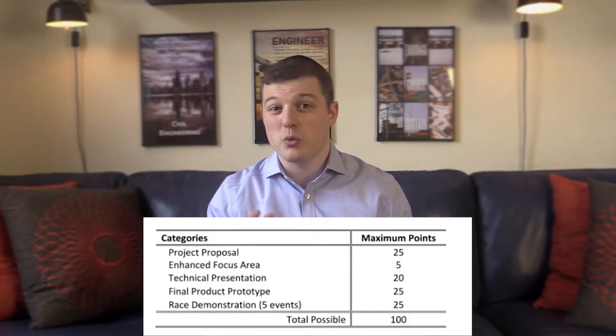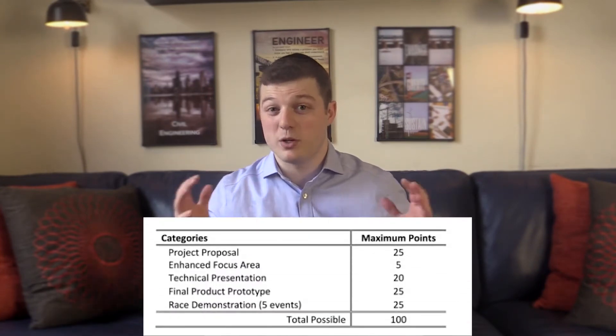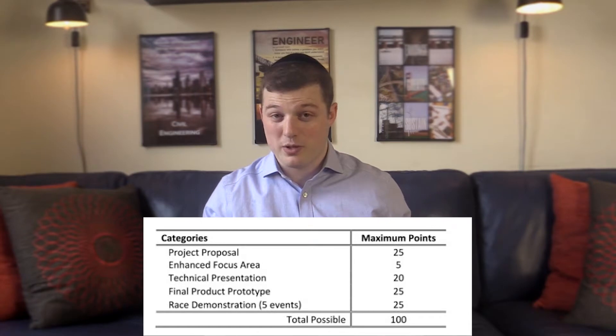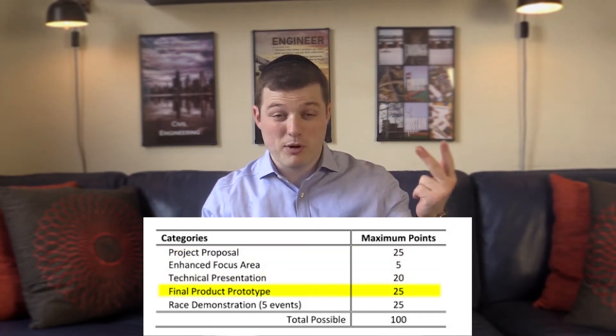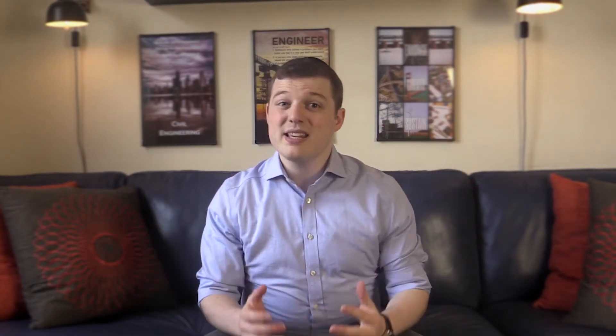The competition is broken down into four components, each worth 25% of an overall grade. The four categories are Design Paper, Oral Presentation, Final Product, and Races. The ASCE has a full rulebook that gets changed each year for each aspect of the categories mentioned. Think of the entire competition like a science project in high school, where there are four grading criteria.